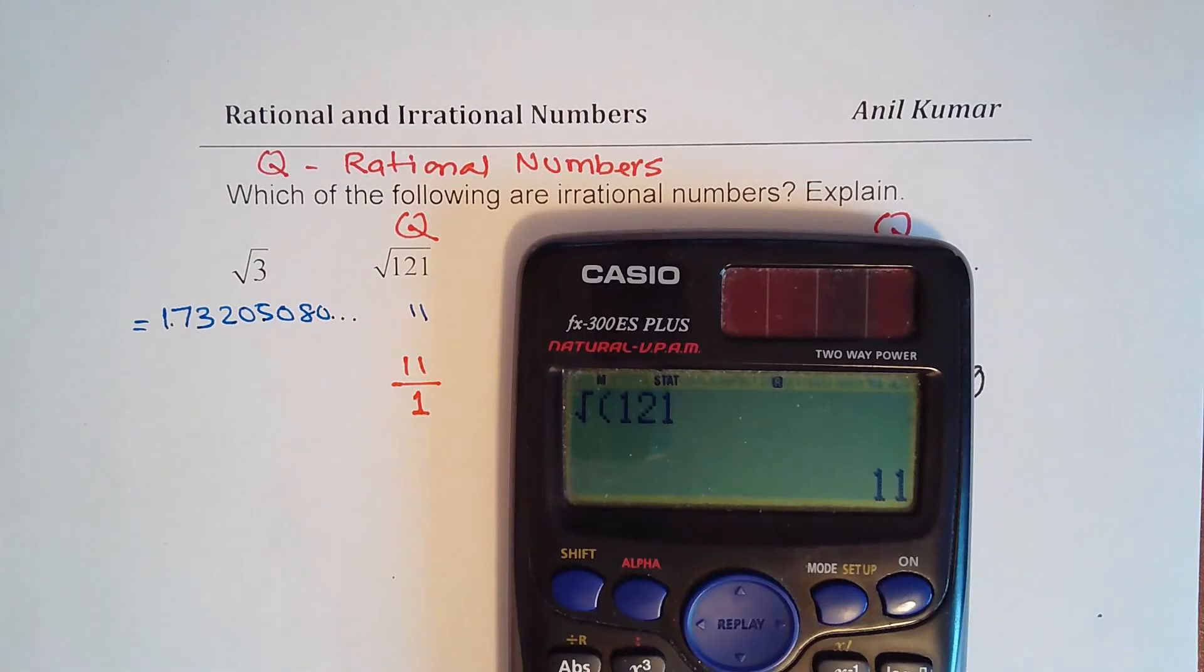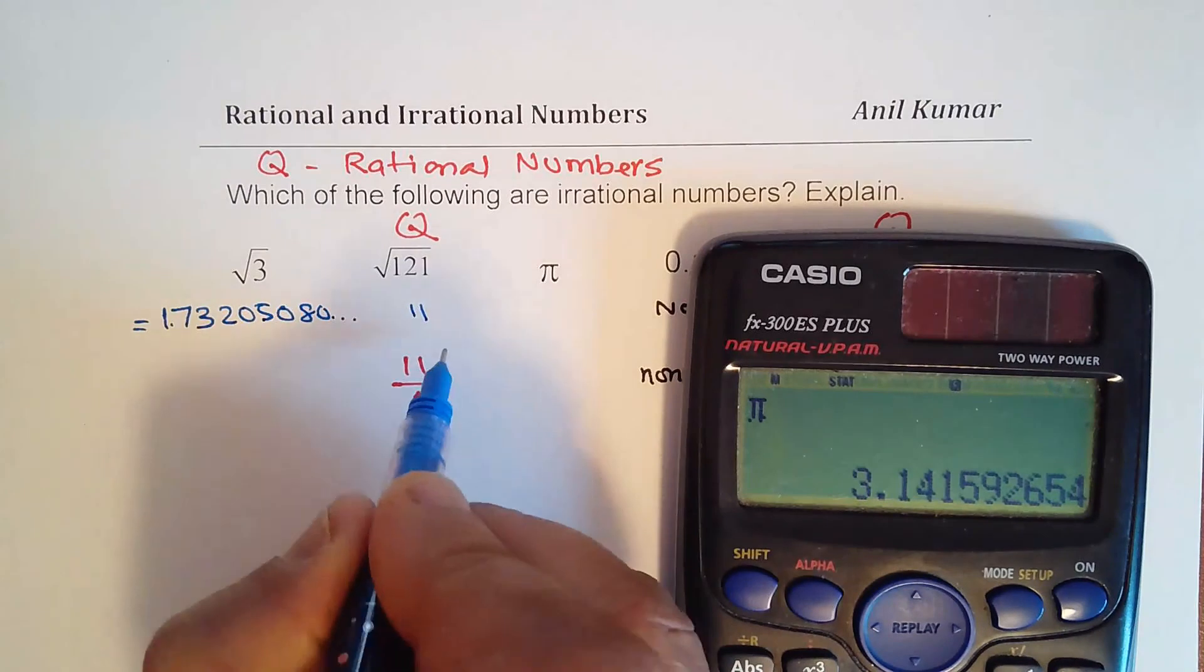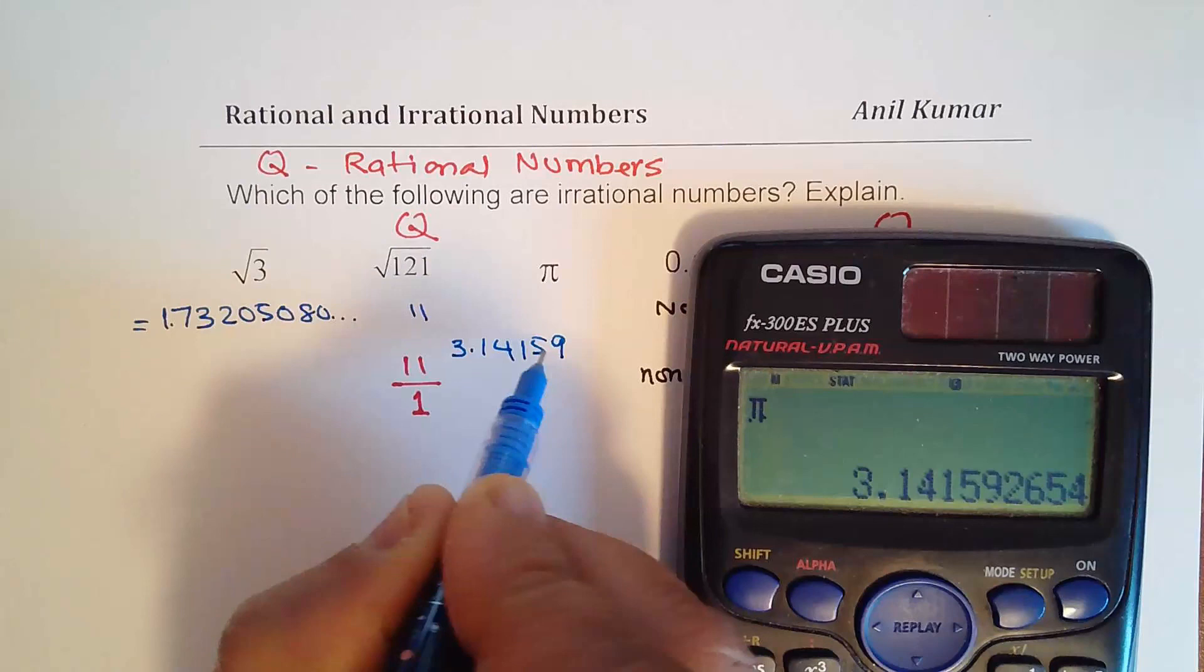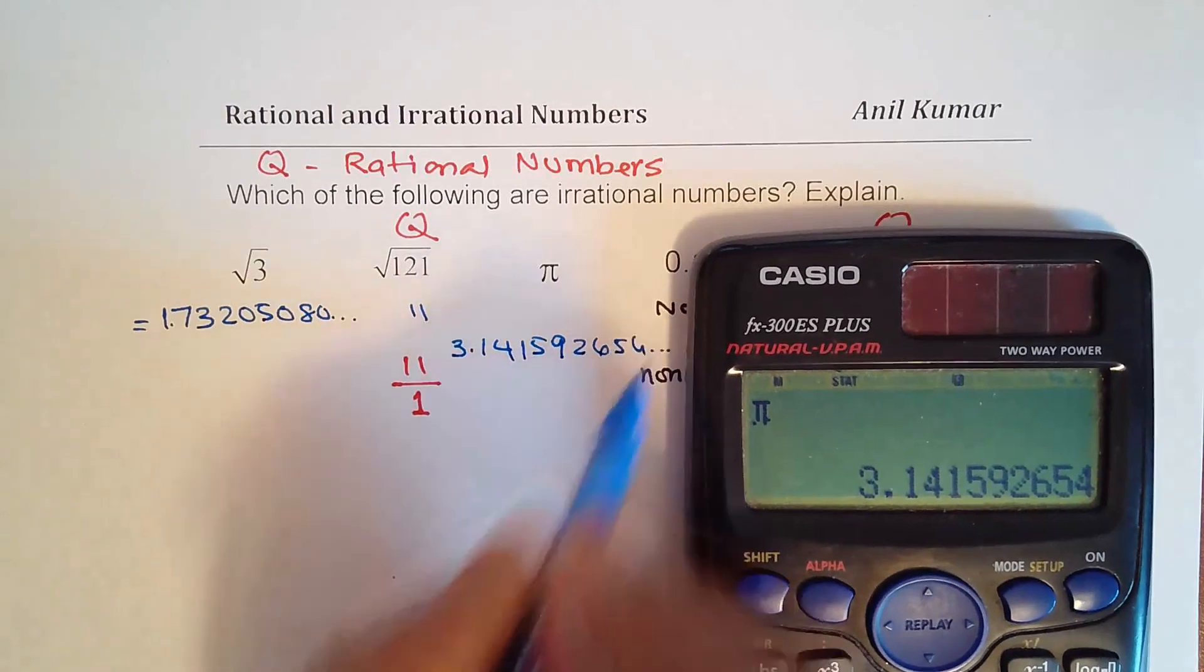We'll take up another video to describe why division by 0 is not valid. Now let's try to see the value of pi. All right, that is a very interesting number. And most of you know that people are working hard to find what this number is. Pi can be written as 3.141592654 and so on.